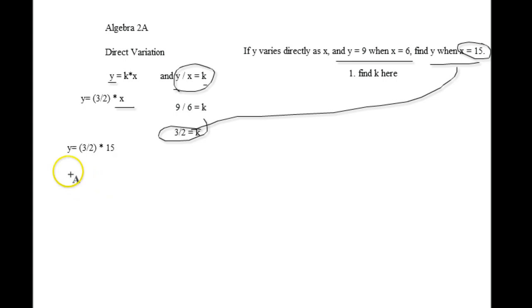So y equals parenthesis 3 divided by 2 times 15. And when you get done multiplying it out, you get y equals 45 divided by 2. And if you wanted a decimal for that, which I highly recommend you don't do, but it's just going to be 22.5.